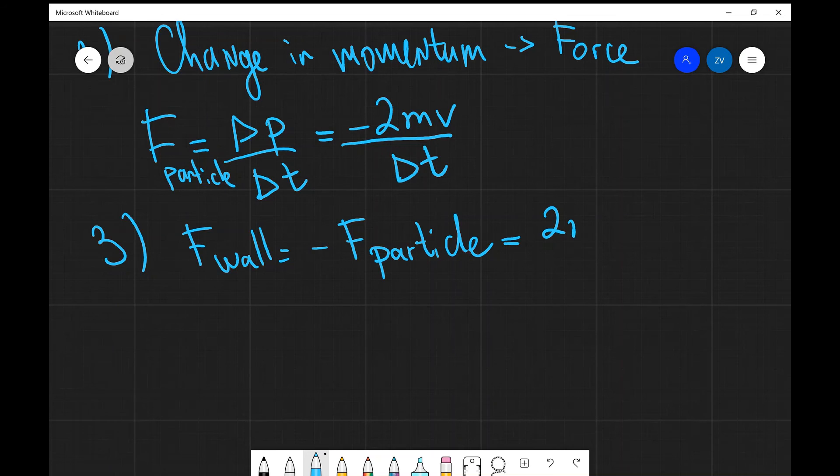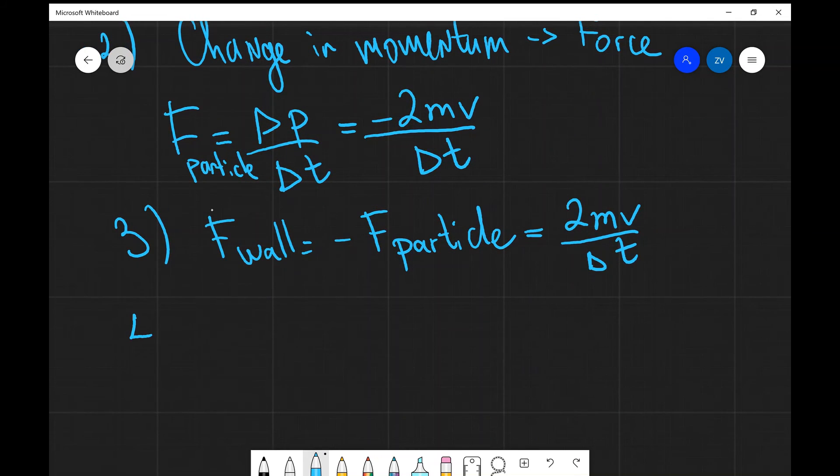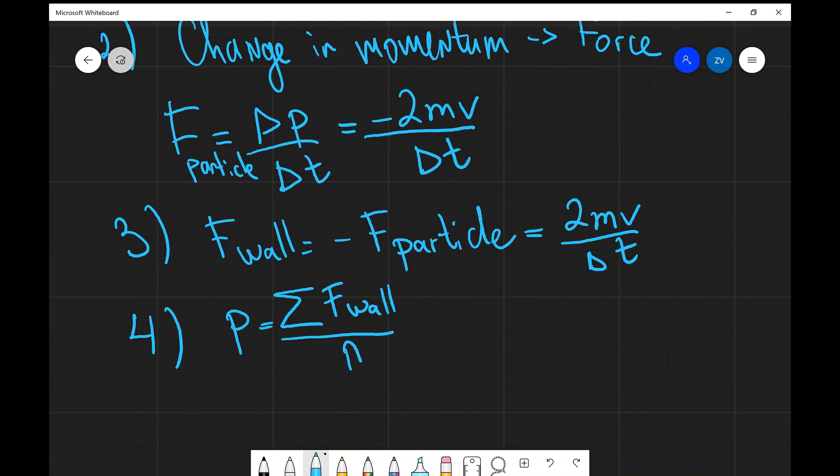So it's going to equal 2mV over delta T. Now pressure is actually going to be the sum of all of those individual forces divided by the area of the walls of the container. So I can say that pressure is going to be the sum of all the forces on the wall divided by the area.